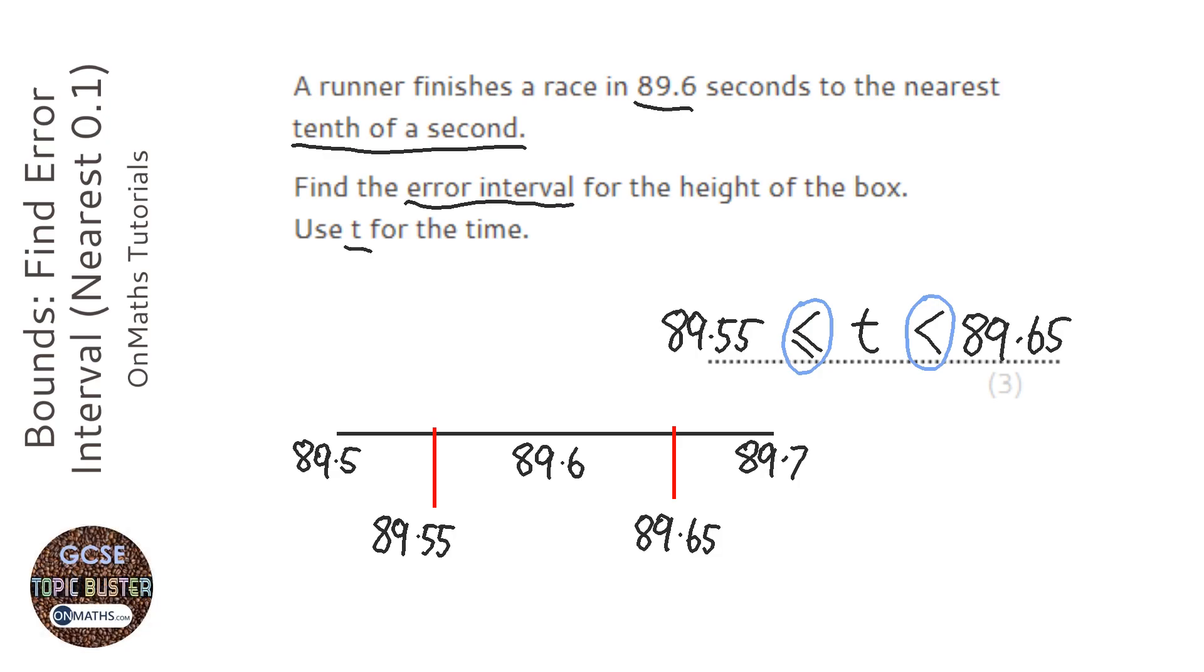The reason why the inequality has an equals underneath it on the left hand side is because it can be 89.55 and still round to 89.6. The reason it doesn't have one on the right hand side is 89.65 would have rounded to 89.7.